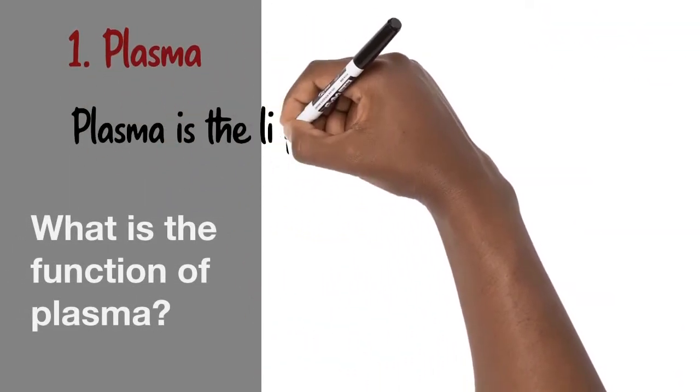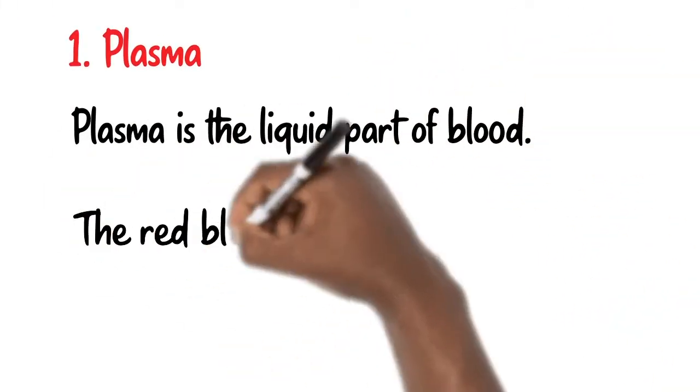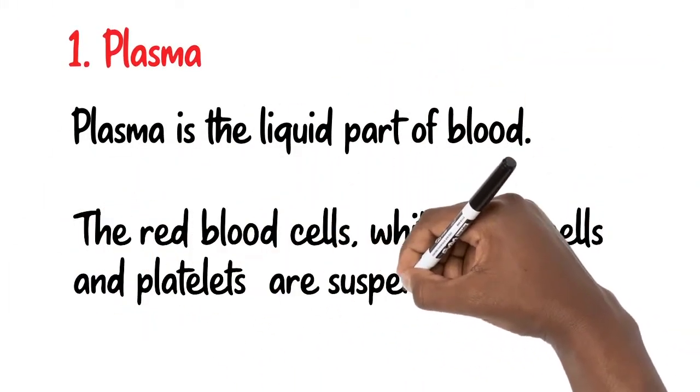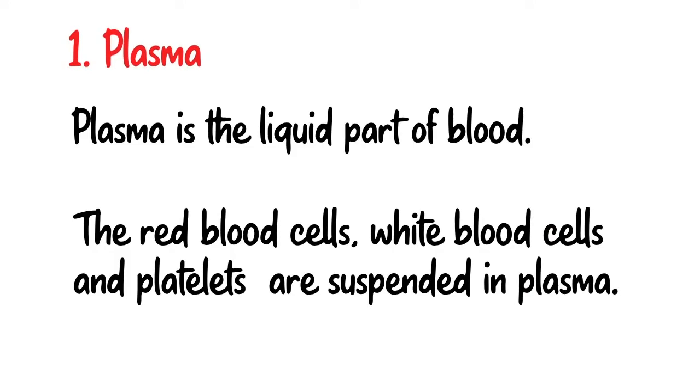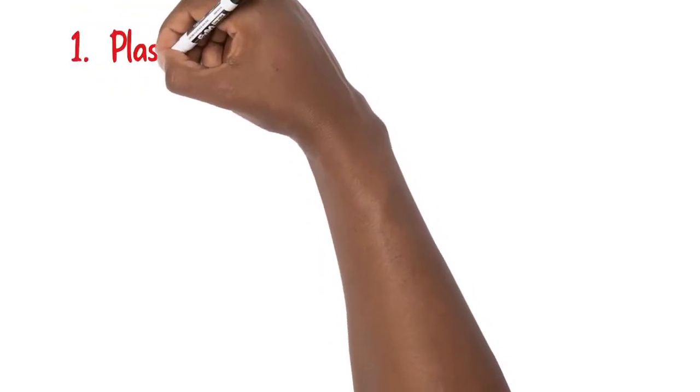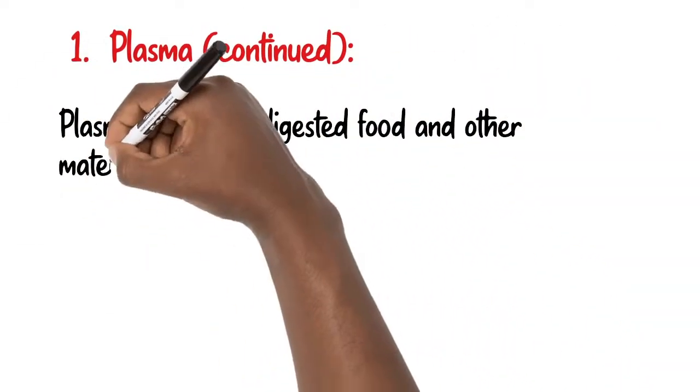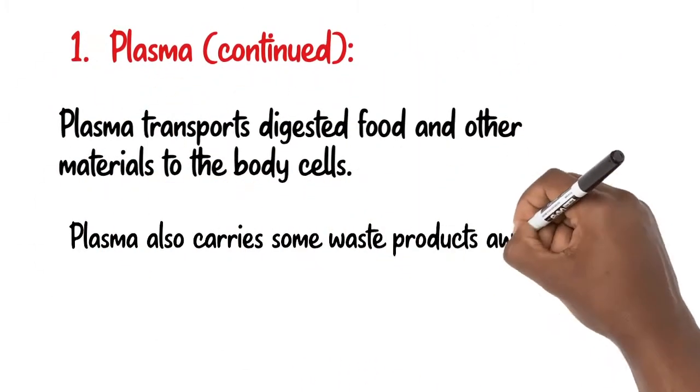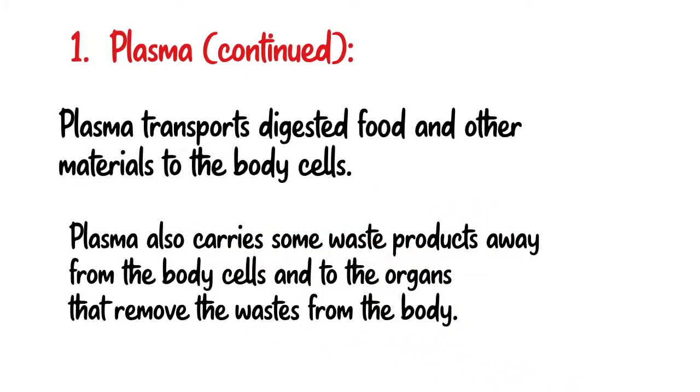Plasma is the liquid part of blood. The red blood cells, the white blood cells, and the platelets are suspended in plasma. Plasma transports digestive food and other materials to the body cells. Plasma also carries some waste products away from the body cells and to the organs that remove the waste from the body.